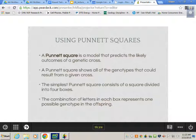A Punnett square is a model that predicts the likely outcome of a genetic cross. A Punnett square shows all of the genotypes that could result from a given cross. The simplest Punnett square consists of a square divided into four boxes. The only time you will truly have to do a full Punnett square is if both parents are heterozygous. The combination of letters in each box represents one possible genotype of the offspring.